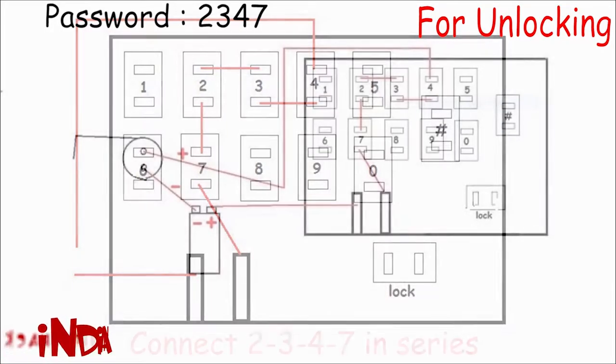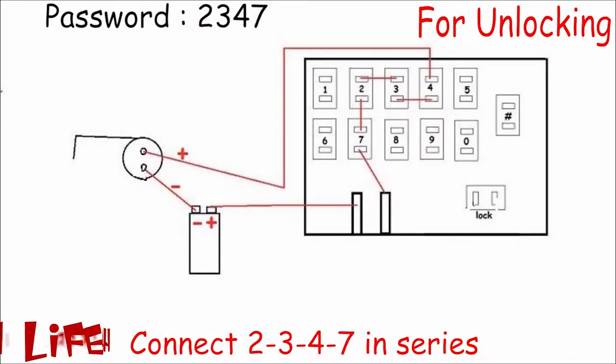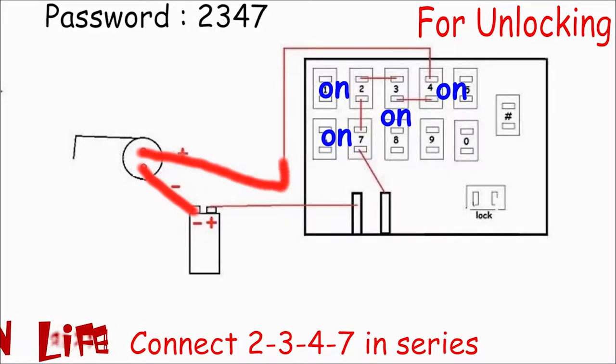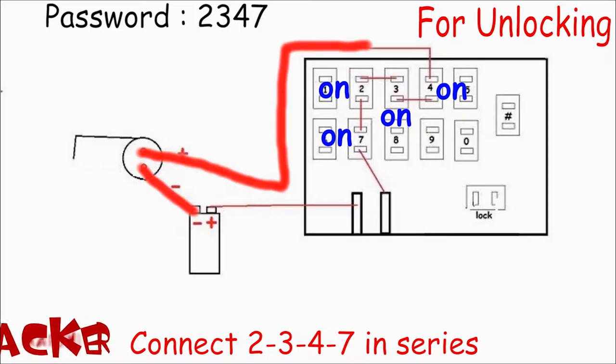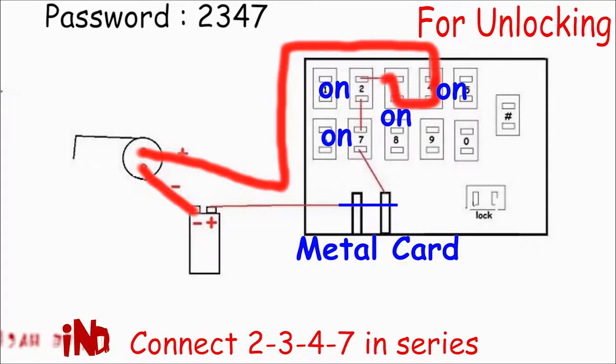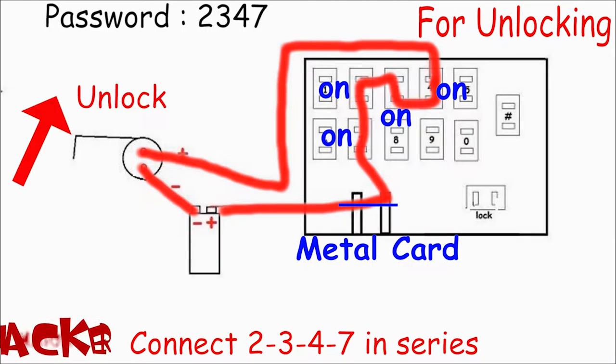We are setting up a password 2347. So connect 2, 3, 4, 7 and two screws in series along with battery and motor. So when we will turn on switches and insert the metal card, current will pass through it and it will unlock the lock.